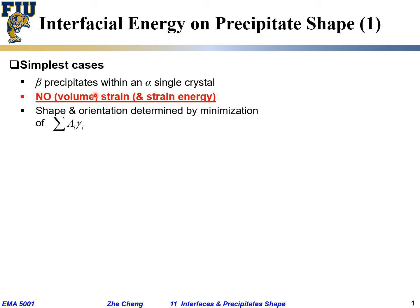And then the shape and the orientation for the precipitate would be determined by minimization of the total Σ Ai γi. Ai for the interfacial area for that particular interface. So Σ Ai γi just tells us the total interfacial energy.